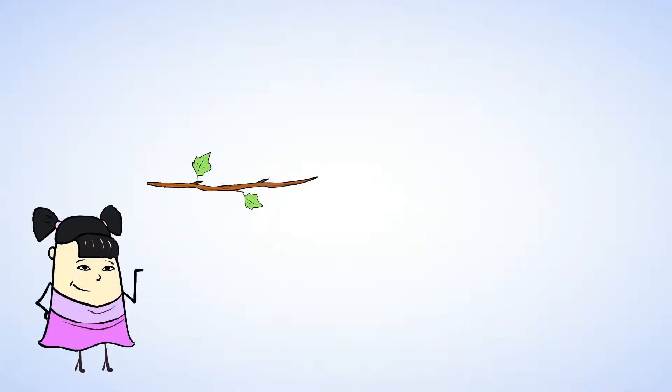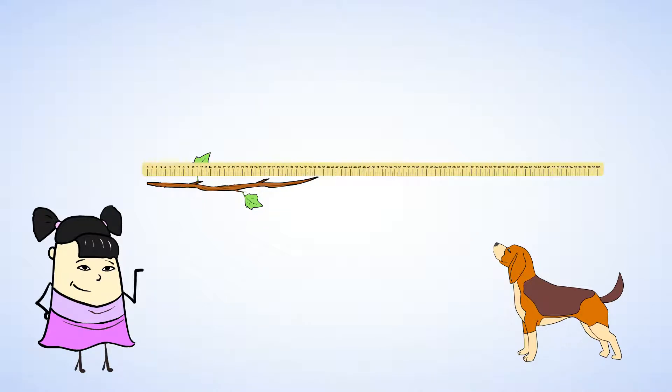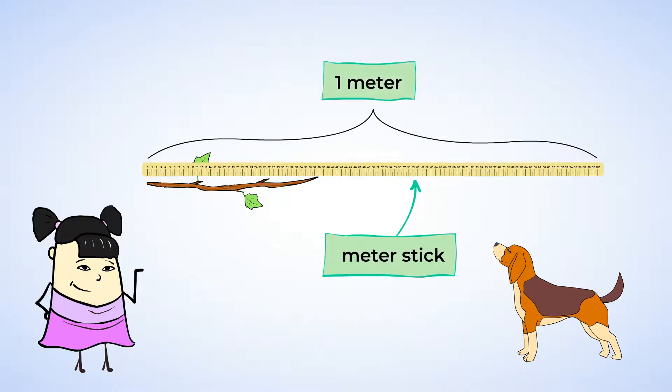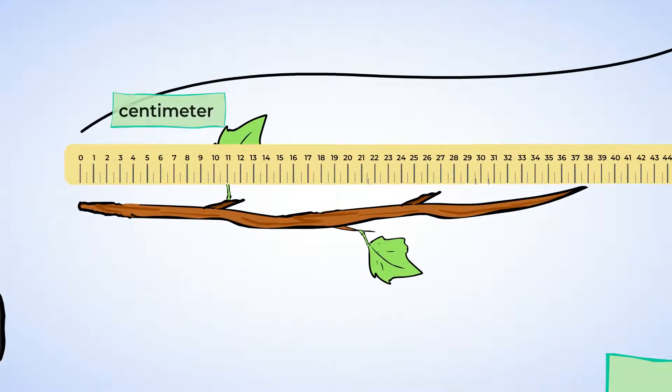What do you say we try measuring this stick one of the dogs brought over? This looks like it's too long for just a 12 inch ruler, so we're going to measure this on the meter stick. A meter stick is 1 meter long and each marking is a centimeter. The stick is perfectly lined up with the edge of the meter stick. That's the first thing to check.